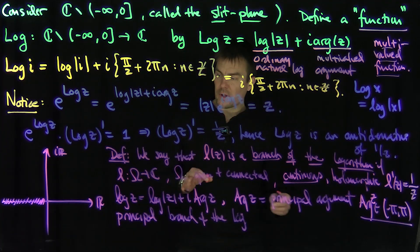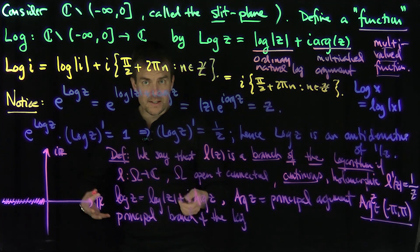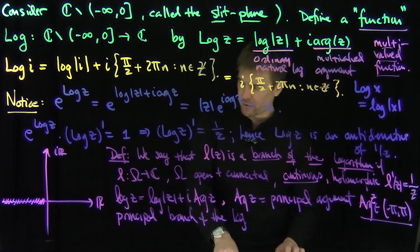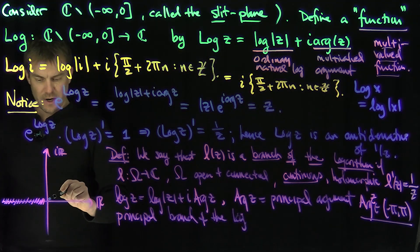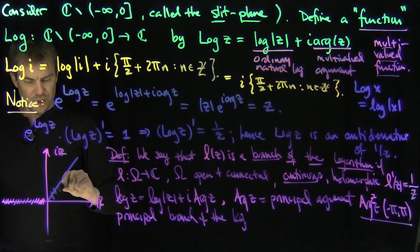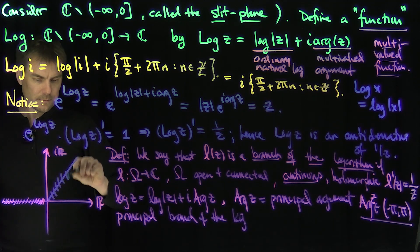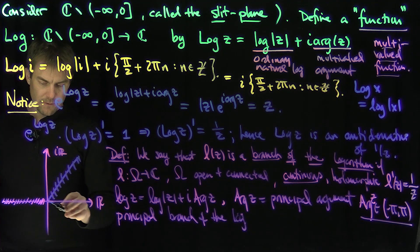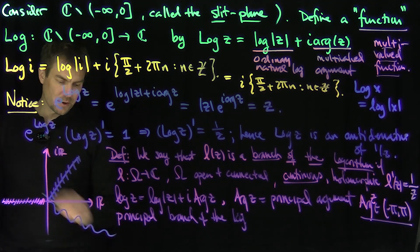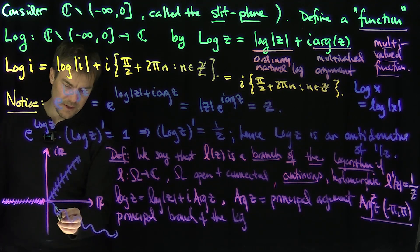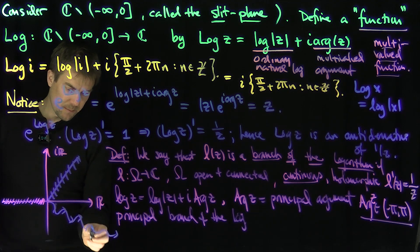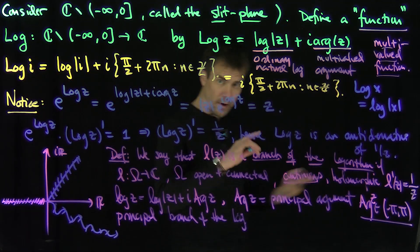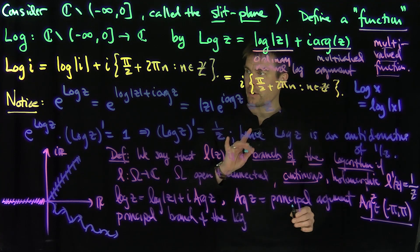It's important to realize that this is not the only choice of a branch of the logarithm — there are other branches. For example, I could punch out a different ray, which gives me a different branch of the logarithm. I can also punch out some sort of curve, as long as it goes to infinity — that's the key feature. That would also give me a branch of the logarithm. So you can punch out different sectors or rays and get different branches.